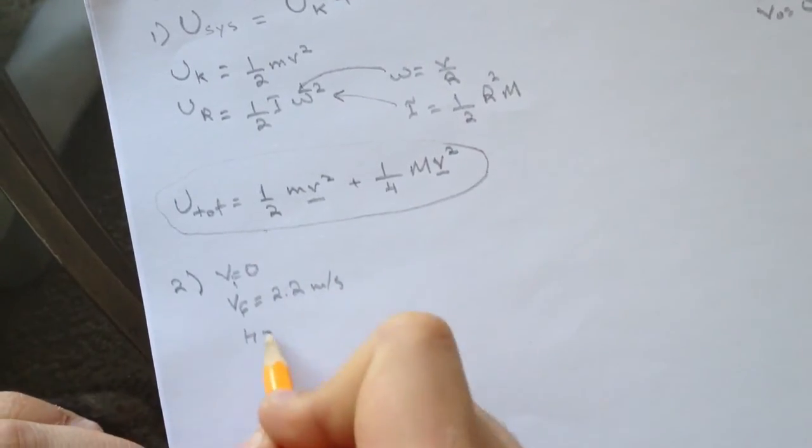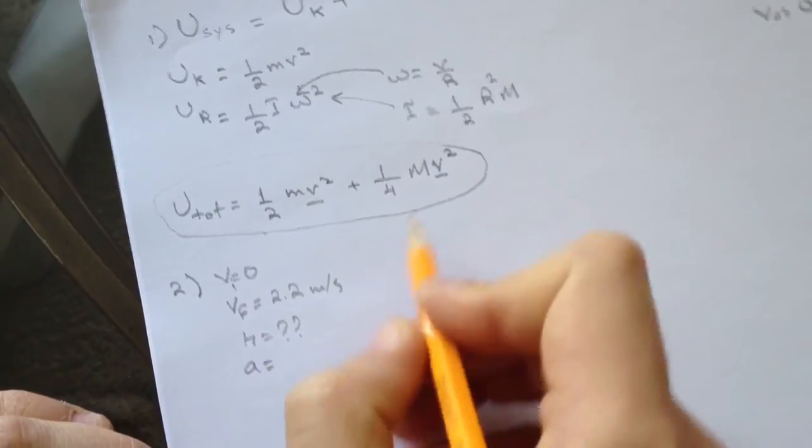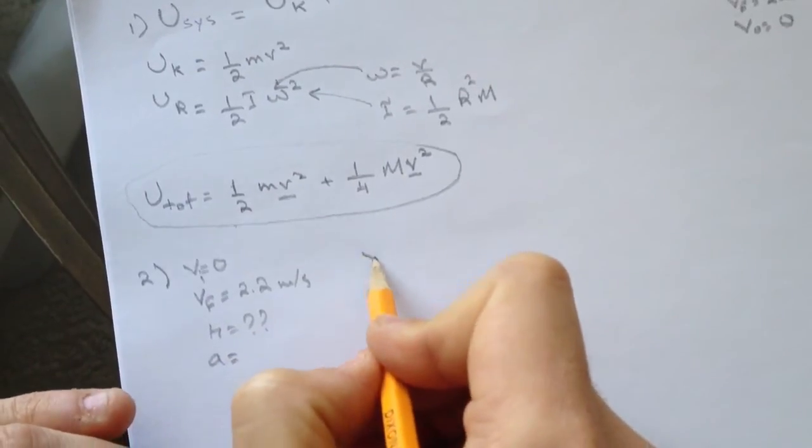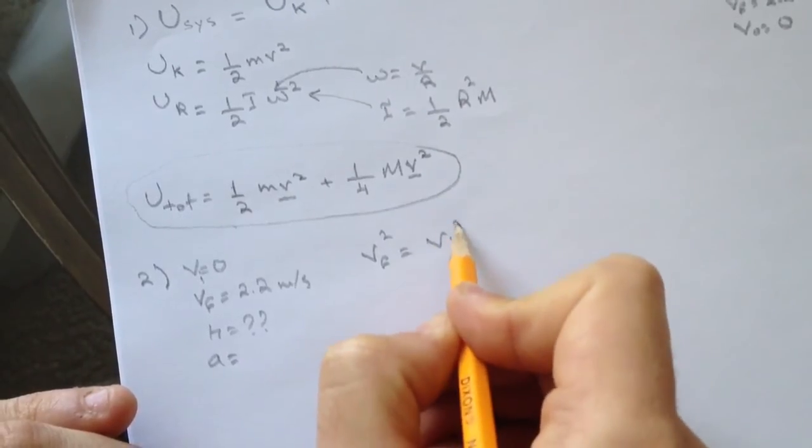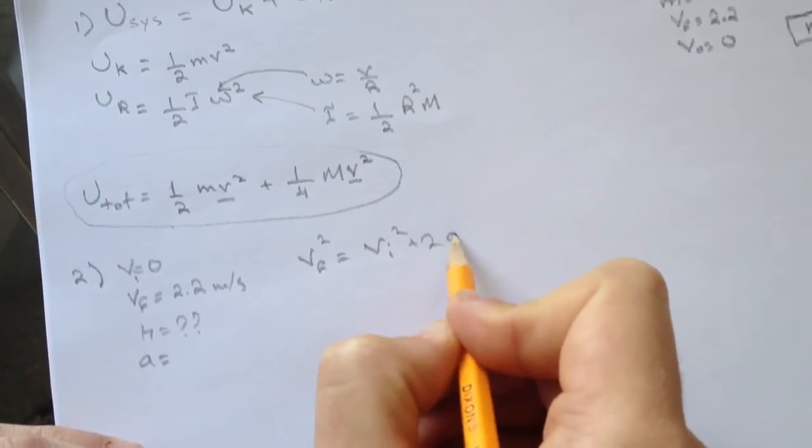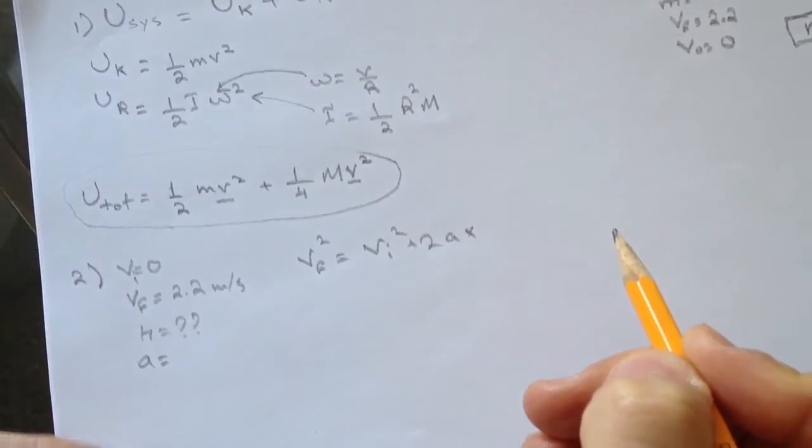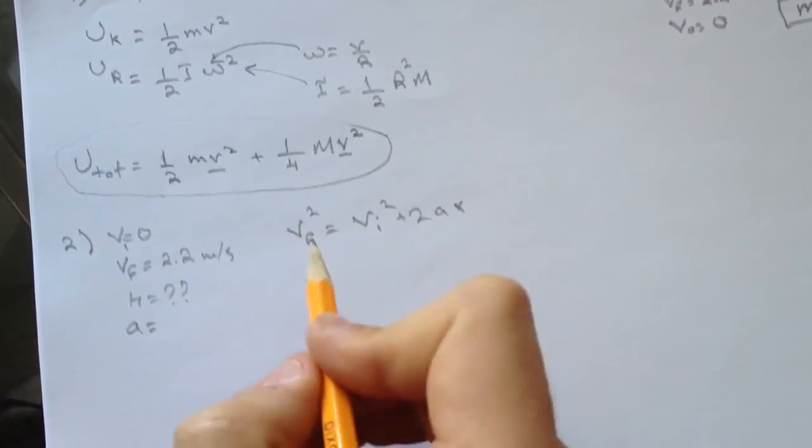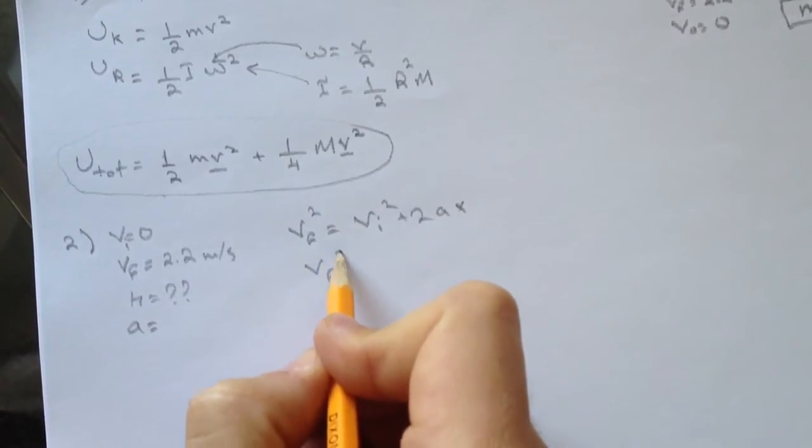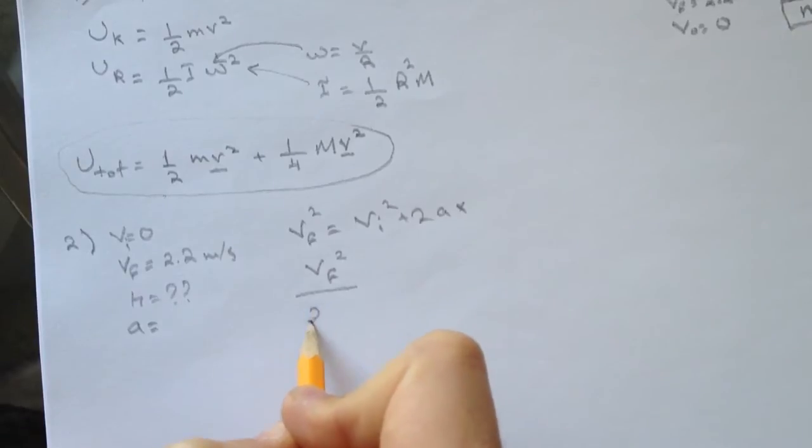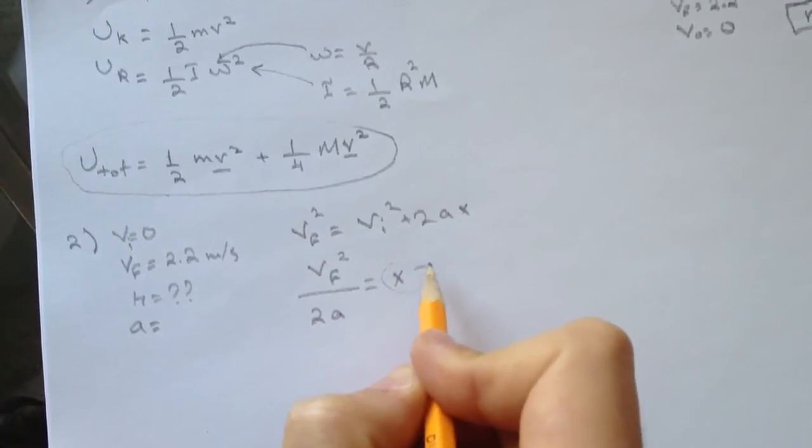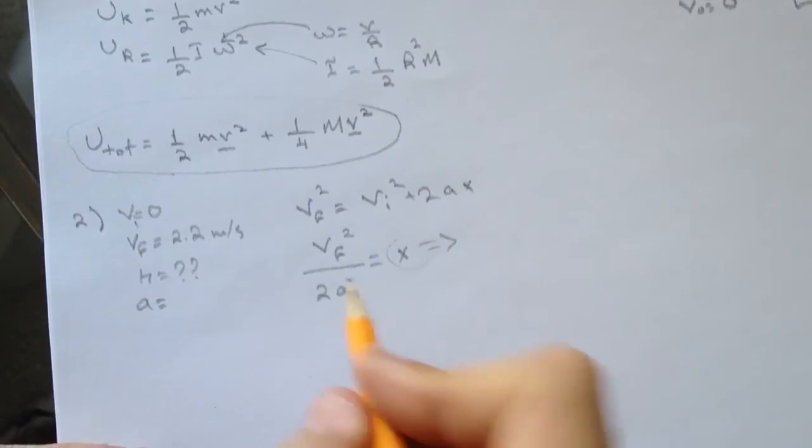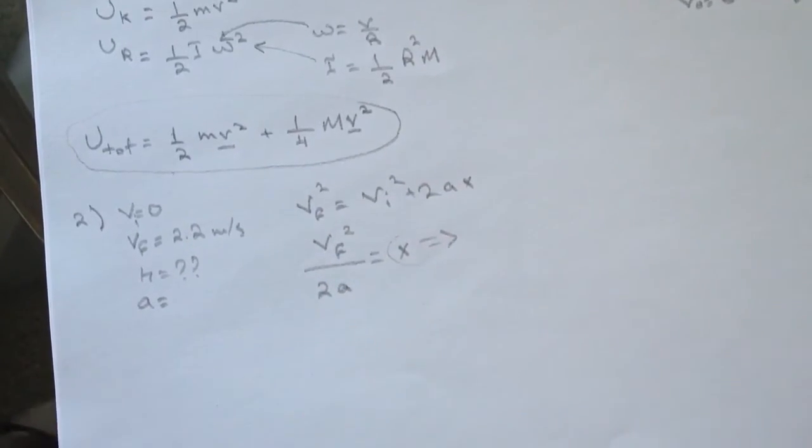We need the acceleration because the equation we can use is v final squared equals v initial squared plus 2ax. Organizing everything, we get x equals v squared over 2a, and this is the height we want to find. So we need to find a.